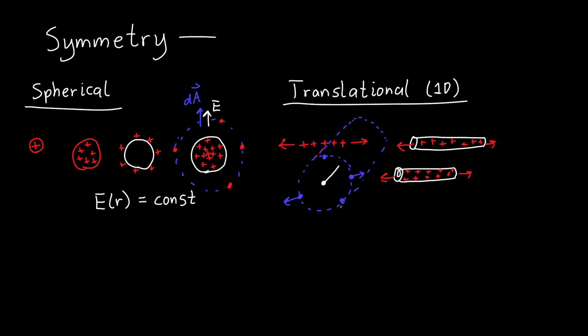Since E points in the same direction as our surface normal and is constant, the integral becomes a simple multiplication. But why is this called translational symmetry?